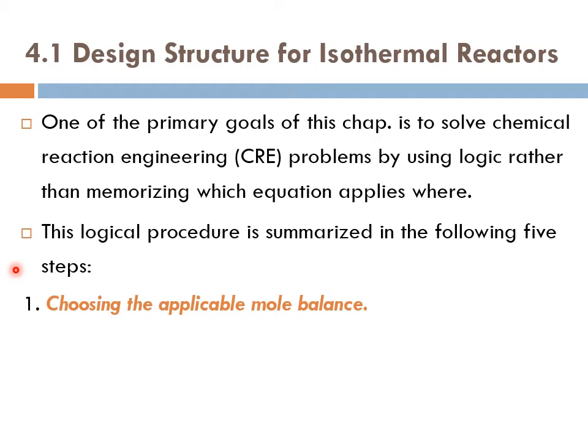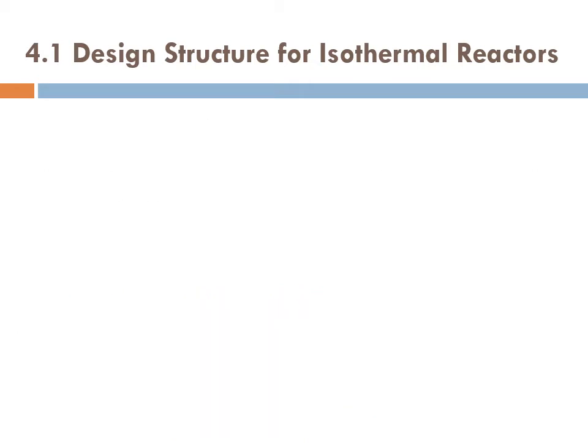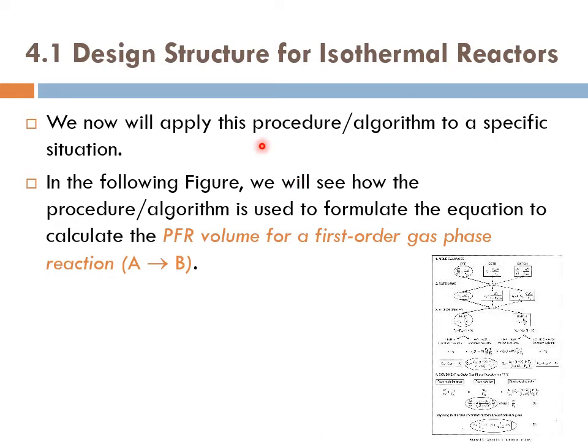This logical procedure is summarized in the following five steps. First, choosing the applicable mole balance, then writing the correct rate law, then utilizing the stoichiometry, then combining all of the above, and finally evaluating the parameters and equations. We will now apply this procedure or algorithm to a specific situation. In the following figure, we will see how the procedure and the algorithm is used to formulate the equation to calculate plug flow reactor volume for a first order gas phase reaction, A goes to B.